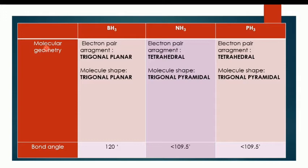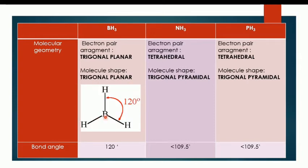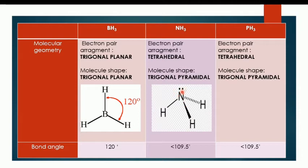Now for molecular geometry, you must explain the electron arrangement and the molecule shape. For PH3, the electron pair arrangement is trigonal planar and the molecule shape is also trigonal planar. For NH3 and PH3, both are the same: the electron pair arrangement is tetrahedral for NH3, and the molecular shape is trigonal pyramidal for NH3, with one lone pair shown in the diagram.